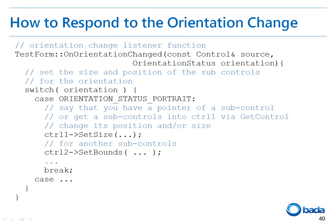After registering this to the listener, if the orientation of the phone is changed, the OnOrientationChanged function of the listener object is called. At this time, the current orientation of the phone is provided as an input parameter.